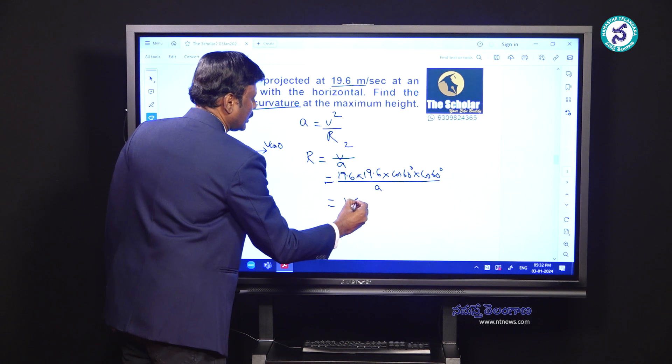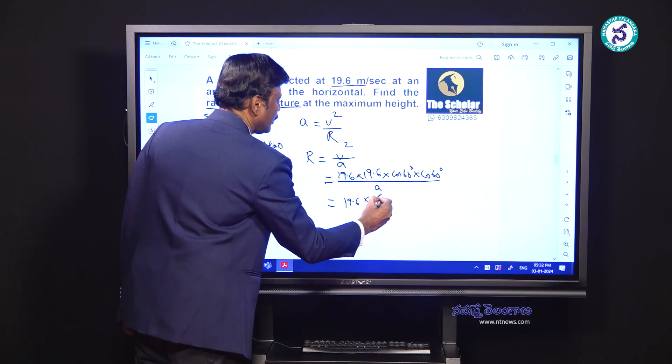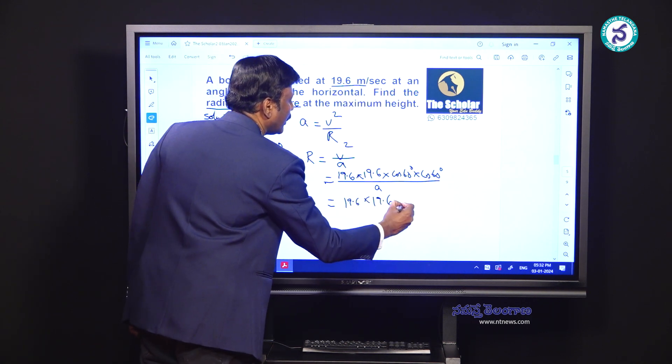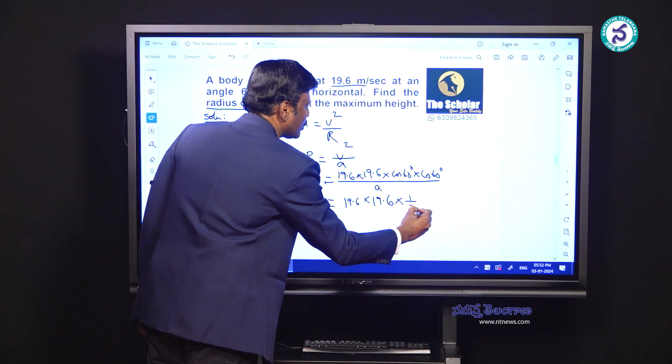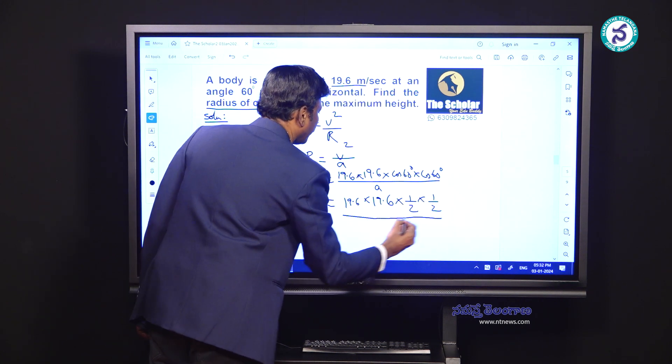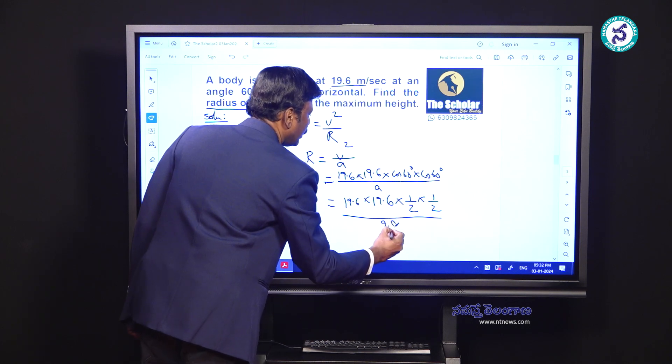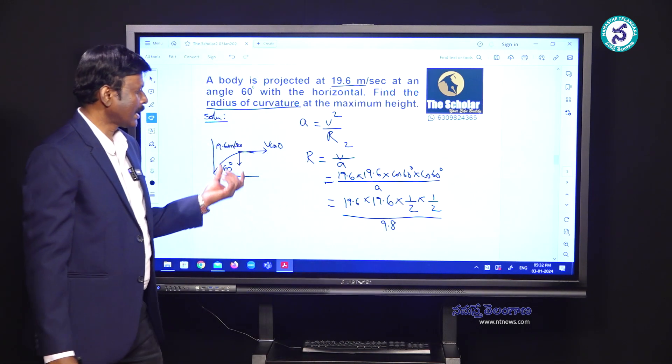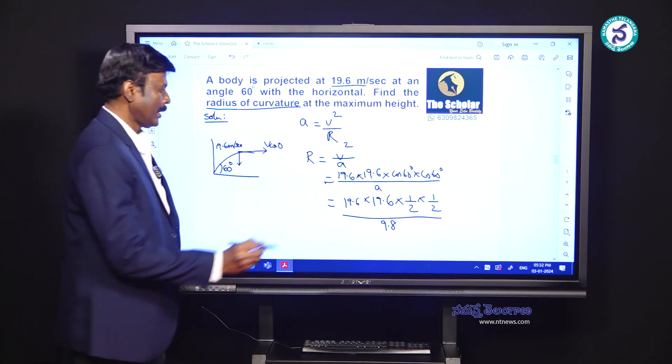Moving further, it is 19.6 into 19.6 into 1 by 2 into 1 by 2. You know cos 60 is 1 by 2. For the value of A, since the body is moving under gravity, you can take A as 9.8.